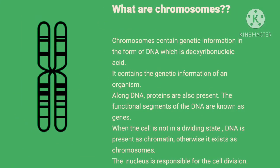Chromosomes contain genetic information in the form of DNA. The full form of DNA is deoxyribonucleic acid. The DNA contains the genetic information of an organism. The basic unit of a DNA is a nucleotide. Many nucleotides join together to form a DNA. The nucleotide is itself made up of a phosphate backbone, a sugar group, and nitrogenous bases.